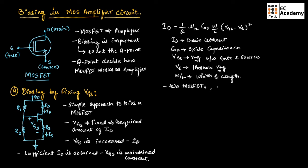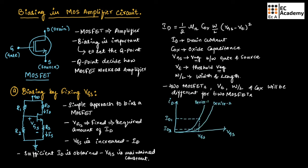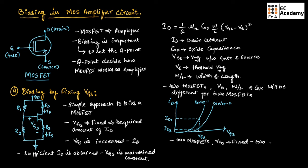Now, if we consider two MOSFETs, the threshold voltage, W/L ratio, and COX will be different for each. If we consider the characteristics — plotting the graph of VGS versus ID — we get two different curves for two MOSFETs. If VGS is fixed, we will obtain two different drain currents for the two MOSFETs. So we can say two MOSFETs will not have the same electrical parameters.